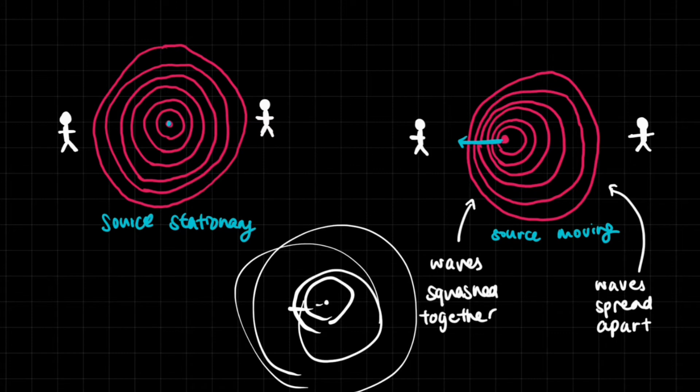And that's what creates this general pattern. So that's why we get this effect where even though both of these sources are emitting sounds of the same frequency, one side has more squashed waves than the other side, which has more spread waves.